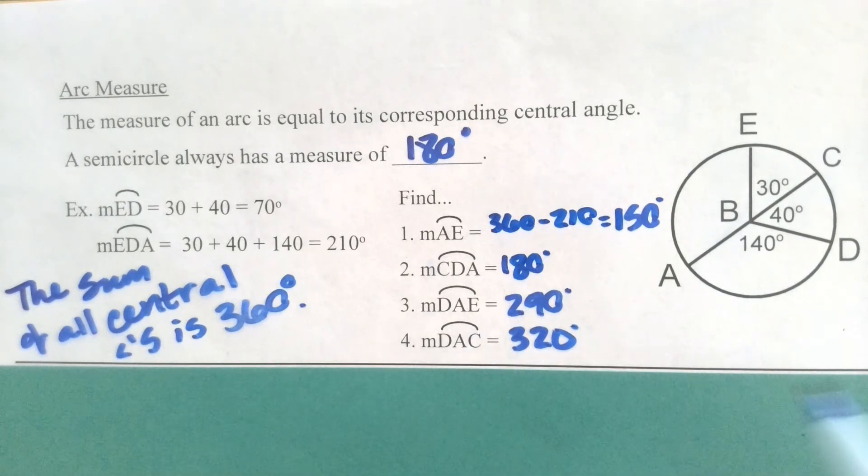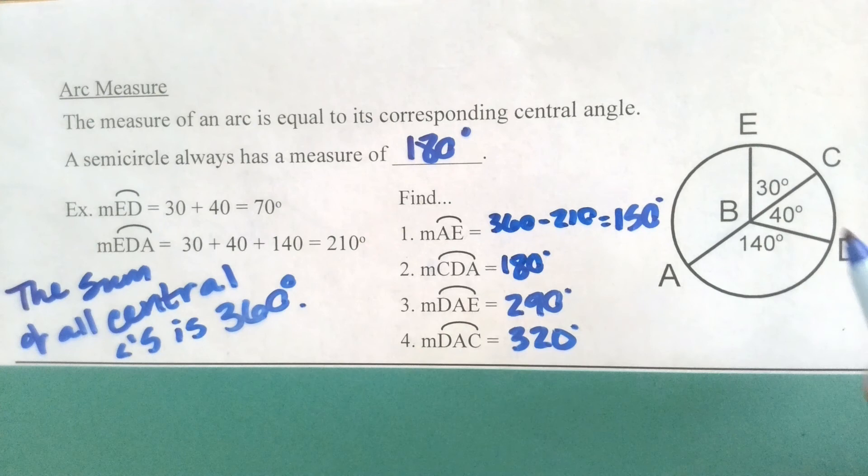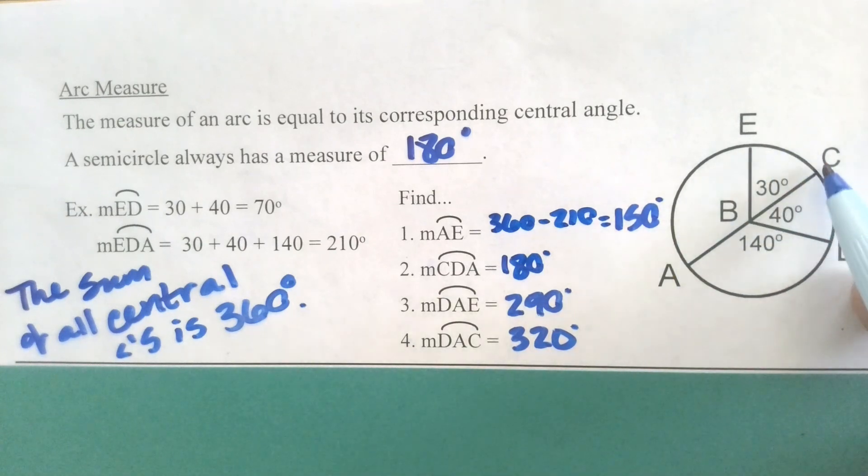For the measure of arc DAE, make sure that you're following the major arc and not the minor since it has three letters. It's the big arc here. So probably the easiest way is taking 140 plus 150, but you also could take 360 and subtract out 70. That would work as well. For arc DAC, again, looking at a major arc here, you can take 360 and subtract 40, or you could add 140, 150, and 30.